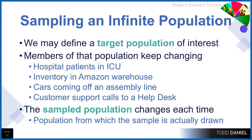What would be examples of an infinite population? The hospital patients in an ICU at this time. The inventory at the Amazon warehouse — is that constantly changing, with new things coming in and going out? The cars coming off an assembly line: we're making the same kinds of cars, but the cars right now will be sold and a new set of cars will be coming on.